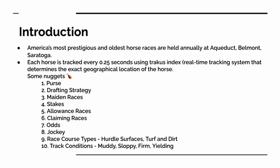Drafting strategy refers to moving close behind another competitor to reduce the work required to overcome drag. Maiden races include races in which horses that have never won compete; horses remain maiden until they notch their first win. Stakes are the most prestigious races and naturally pay the highest purse. Allowance races include weights fastened on the horses to keep the competition fair. In claiming races, horses are sold at races because bids are placed on them prior to the event. Odds are the chances of a horse winning a particular race. Jockey refers to the person who rides the race.